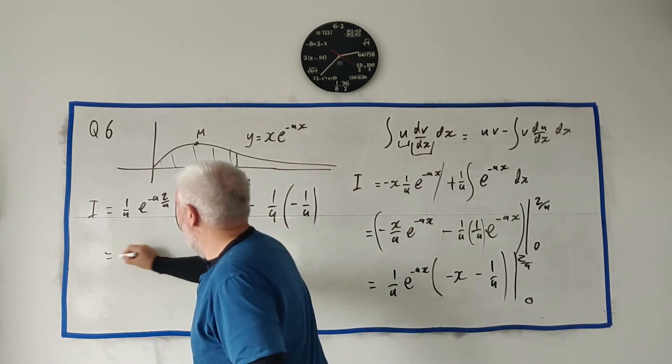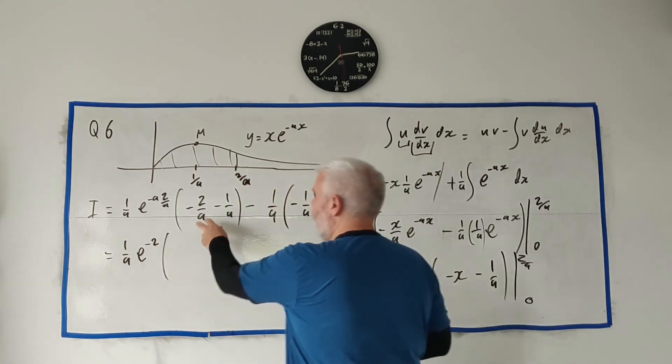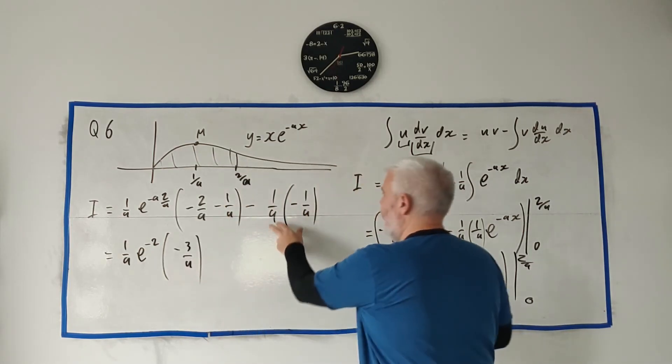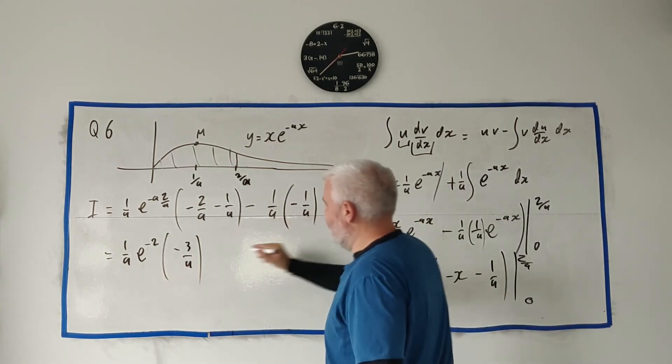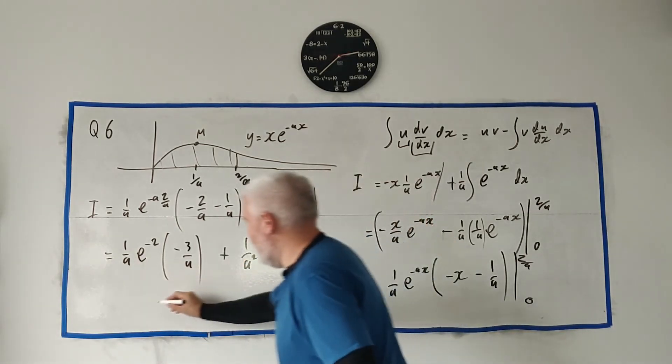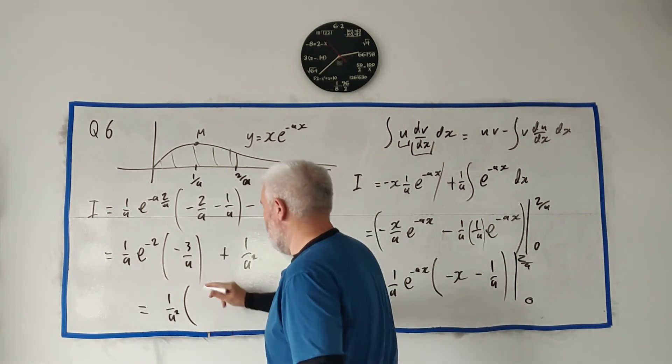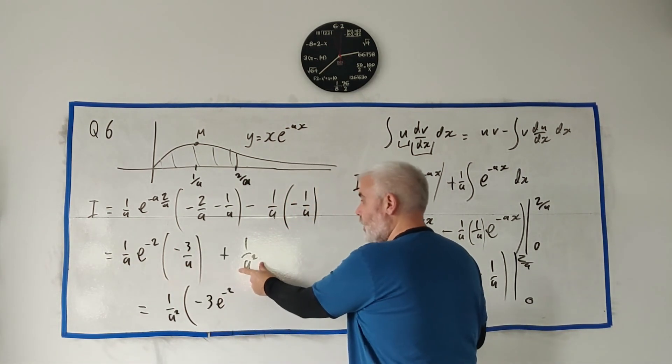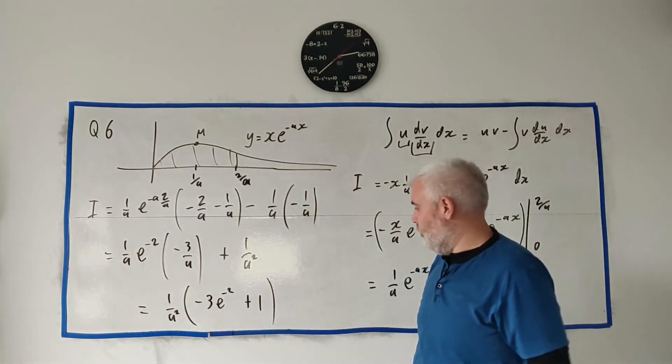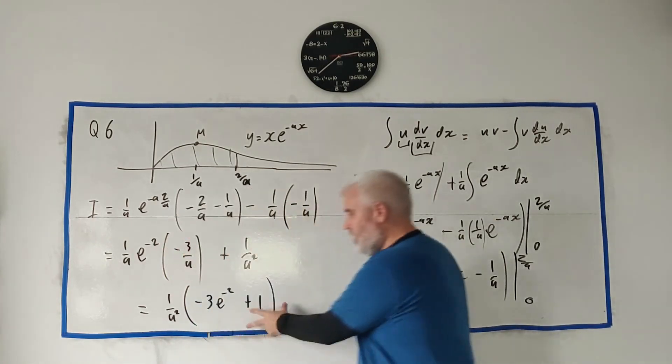We have 1/a outside, the a's cancel giving e^(-2). Inside the bracket: -2/a - 1/a = -3/a. Then minus minus gives plus 1/a². We also have a² here, a times a. Let's take 1/a² out of both. What's left is -3e^(-2) + 1, which can be written as (1/a²)(1 - 3e^(-2)). That answers question 6.